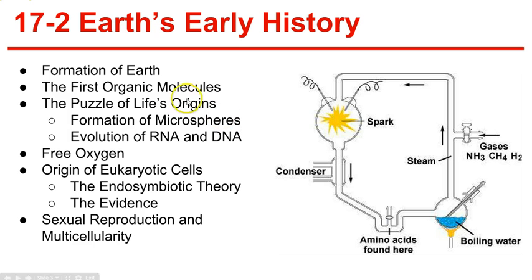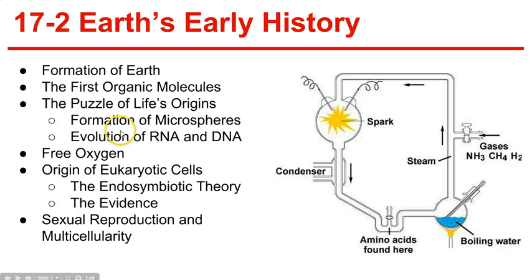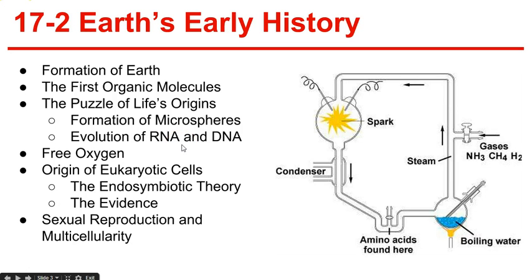The puzzle of life's origins: the formation of microspheres. Under certain conditions, large organic molecules can form tiny bubbles called protonoid microspheres. They aren't cells, but they have some characteristics of living systems — they have selectively permeable membranes and simple means of storing and releasing energy. Next, the evolution of RNA and DNA: RNA sequences can help DNA replication, process mRNA, and catalyze other chemical reactions. This suggests that RNA existed before DNA.